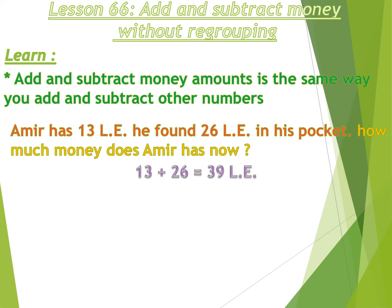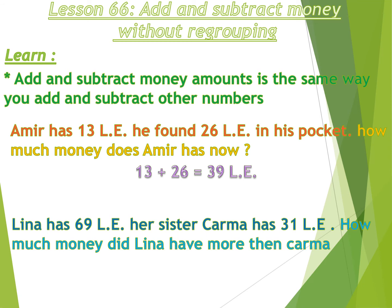The amount will be 39 pounds. Now another example: Lina has 69 pounds, her sister Karma has 31 pounds. How much more money does Lina have than Karma? 'More than' means minus. 69 minus 31: 9 minus 1 equals 8, 6 minus 3 equals 3. The amount will be 38 pounds — the difference is 38 pounds.